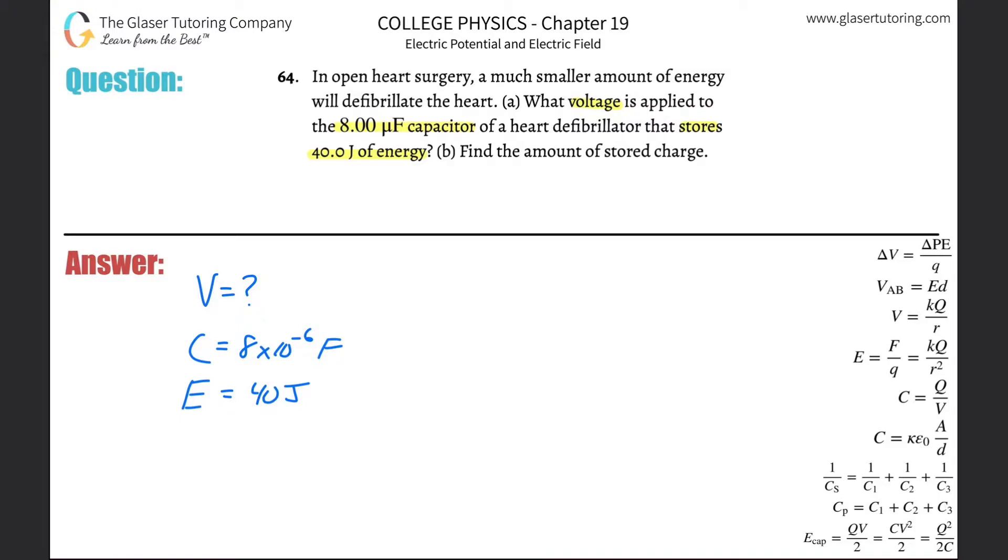Alright, so what's a formula that relates these three together? The formula is the energy of the capacitor will be equal to the capacitance multiplied by the voltage squared all divided by 2. And what do we need to solve for? We need to solve for voltage. So I'm going to do that algebraically first.